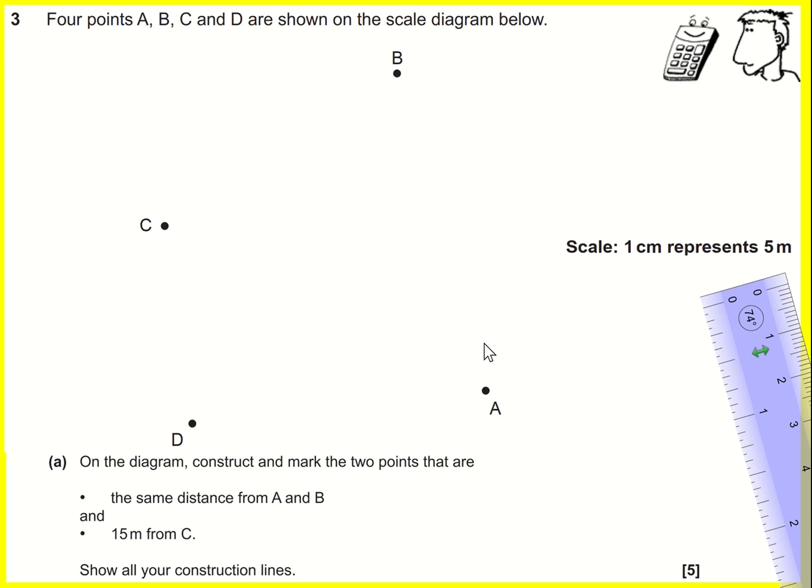We have four points here and we're being asked to do two things. Find the region, well actually the points that are the same distance from A and B, and then the points that are also 15 meters from C.